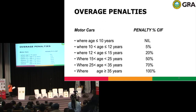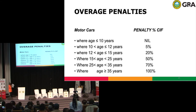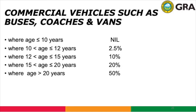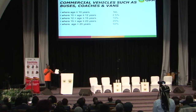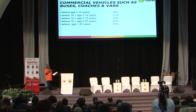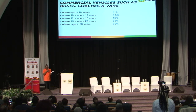There are penalties for bringing in overage vehicles. For commercial vehicles more than 20 years old, you pay a 50% penalty based on the home delivery value — though the 30% discount on home delivery value will also reduce this. For motor vehicles more than 20 years old, you pay a 100% penalty on the home delivery value. I would like to end there — time is done. Thank you.